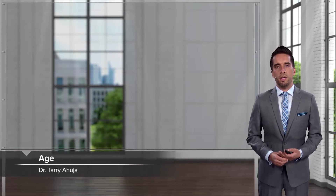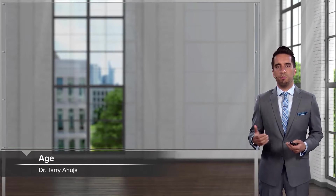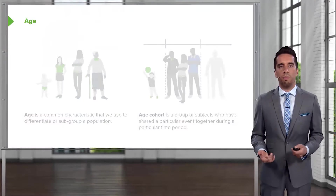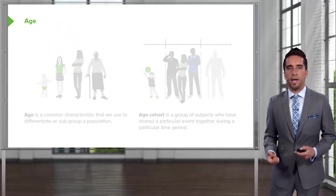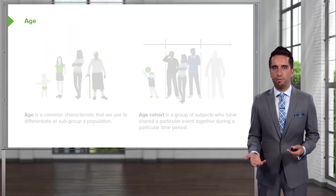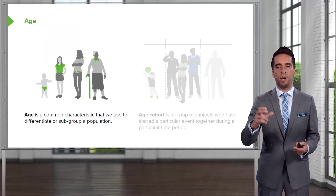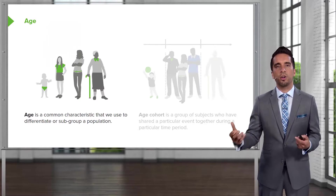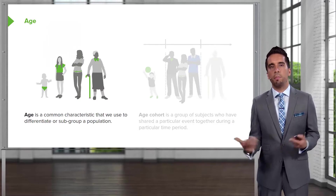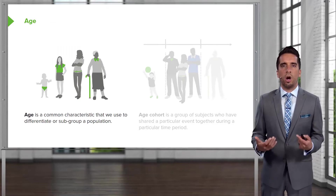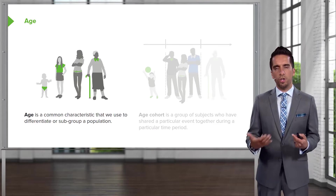Let's examine demographic characteristics and processes. How do we organize and characterize our society? We're going to take a look at some of the easy ones that are pretty straightforward. Age is an easy one — we categorize the population based on age. It's a common characteristic that we use.